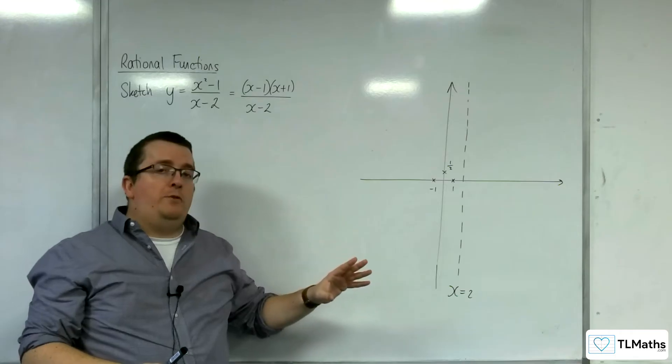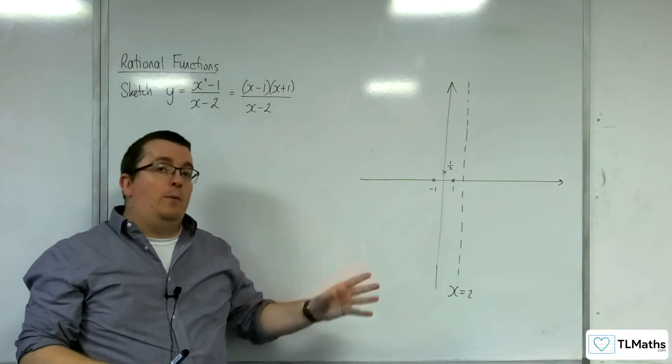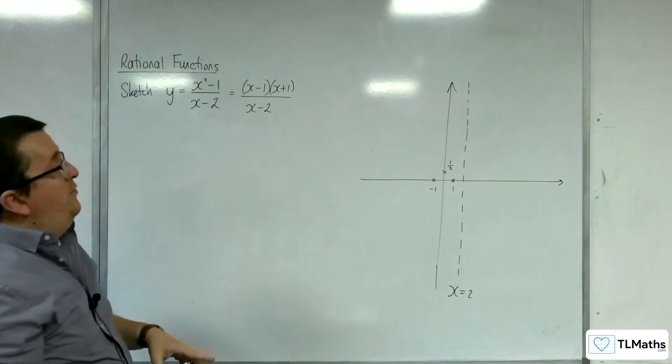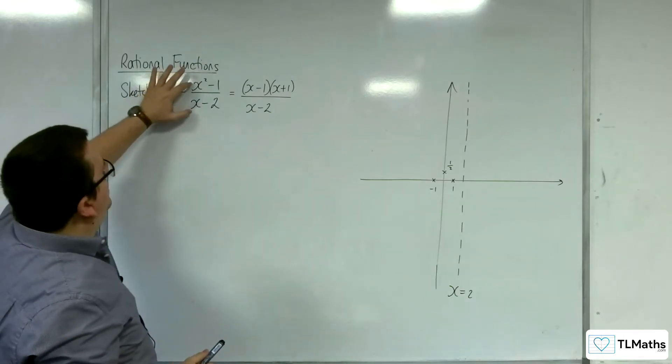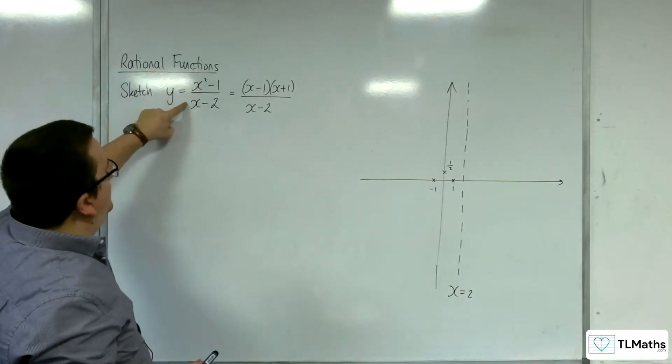Now, at this point, we would have been doing horizontal asymptotes. But now we're going to be looking for oblique asymptotes. So the way to do that is I need to do polynomial division dividing x squared take away 1 divided by x minus 2.